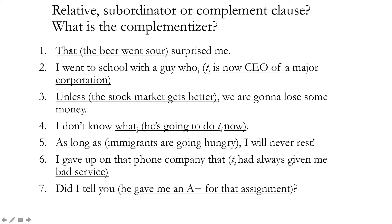Let's look at some examples to identify which of the three types each clause is. 'That the beer went sour surprised me' — 'that' is the complementizer introducing this partly dependent clause; 'the beer went sour' is its own sentence with a complementizer attached. It surprised me — so this is a complement clause, also known as a noun clause.